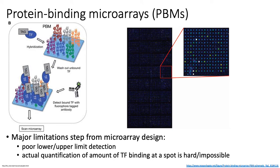Another popular in vitro based assay is called the Protein Binding Microarray, or PBM. The idea is that you design an array with on the order of 44,000 different spots, where on each spot you fix a particular DNA oligo. Collectively across all of these 44,000 different spots, you want the sequences to represent all of the different possible binding sequences of a given TF. You then take your protein of interest and wash it over the PBM, allowing your TF to bind to all the spots containing its binding site.